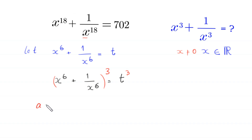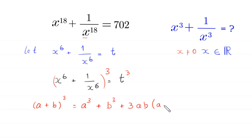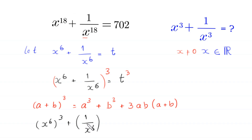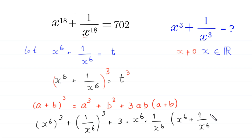By using the algebraic identity a plus b whole cubed is equal to a cubed plus b cubed plus 3 times a b times a plus b, the left hand side will become x to the power 6 whole cubed plus 1 over x to the power 6 whole cubed plus 3 times x to the power 6 times 1 over x to the power 6 times x to the power 6 plus 1 over x to the power 6, all equal to t cubed.